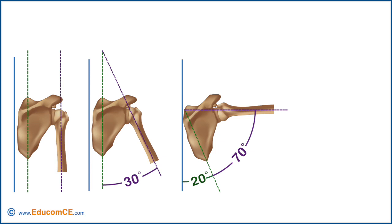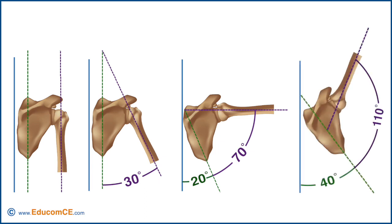On average, there is approximately 2 degrees of glenohumeral movement for every 1 degree of scapulothoracic movement from this point. As the upper extremity moves through abduction to 90 degrees, the glenohumeral joint contributes 40 degrees for a total of 70, while the scapulothoracic joint has only contributed 20. This ratio continues above 90 degrees, so that by the time the arm has been raised to 150 degrees, the contributions would be 110 degrees for the glenohumeral and 40 for the scapulothoracic.